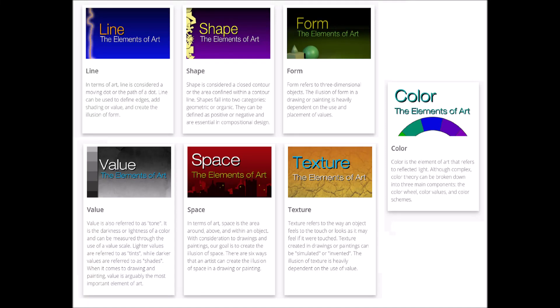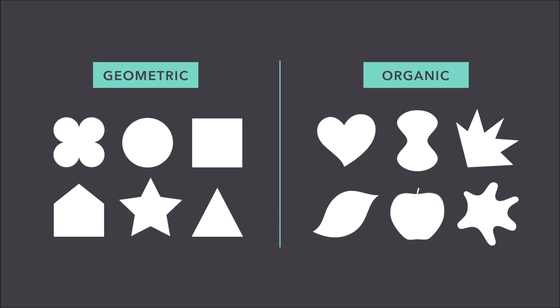Today's project is based on the seven elements of art. Our focus is the element of shape. In art there are two types of shapes, geometric and organic.